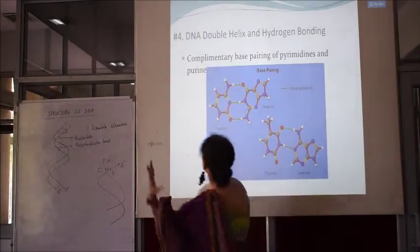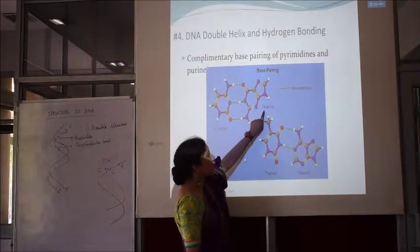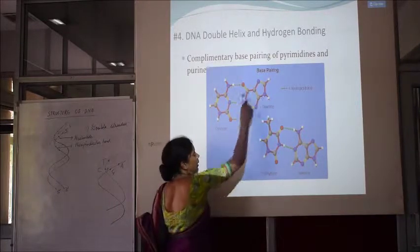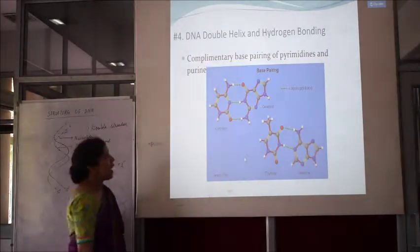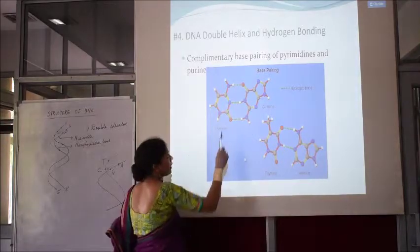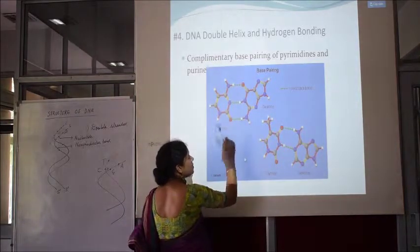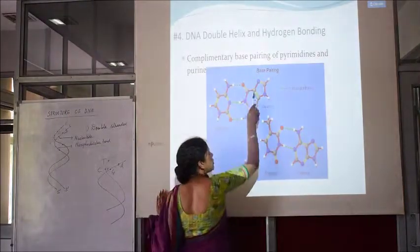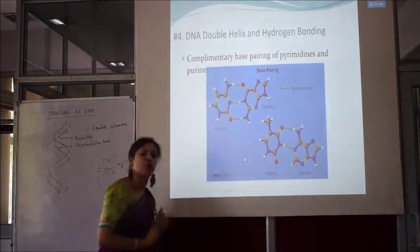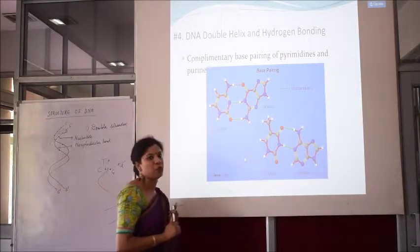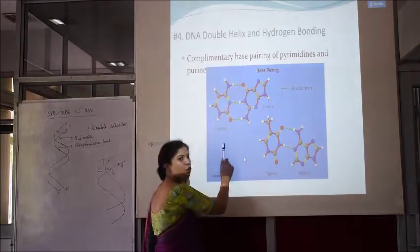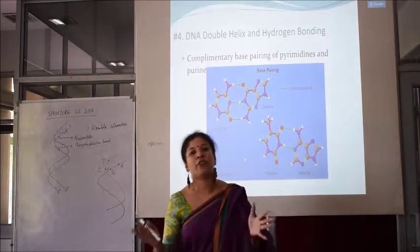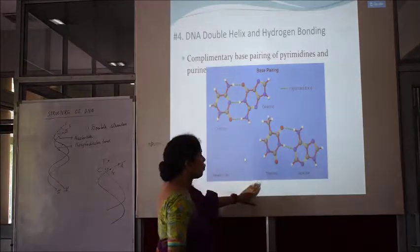Here you can see the structure of cytosine and the structure of guanine. Guanine has a six-membered ring followed by a five-membered ring, and cytosine is a pyrimidine. Cytosine will always base pair with guanine, and you can see that there are three hydrogen bonds shown as green bonds. So if guanine is present on one strand of DNA, cytosine must be present on the second complementary strand. They always follow this principle — guanine and cytosine always complement each other.